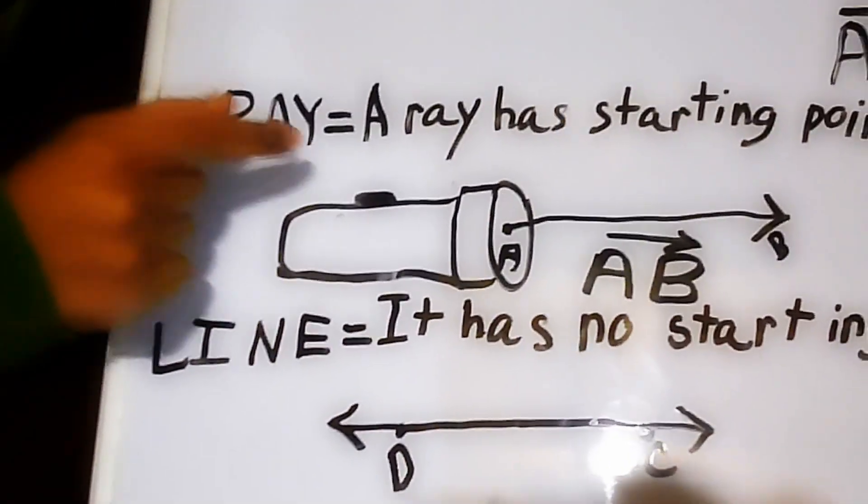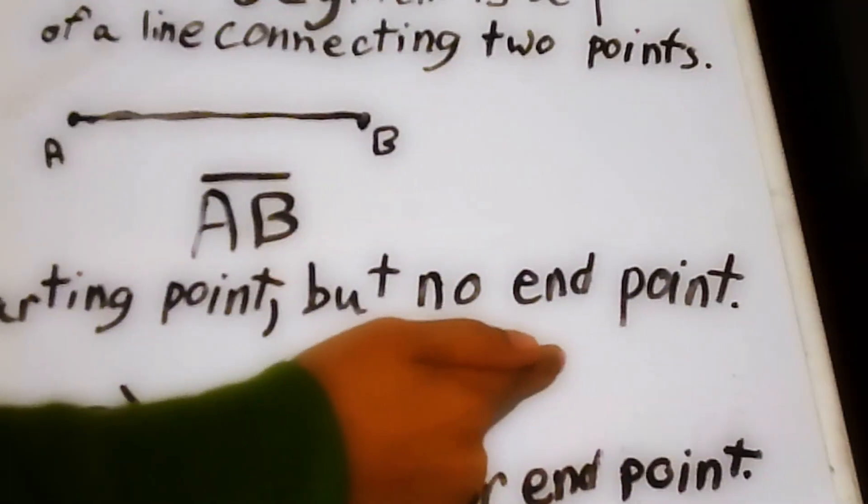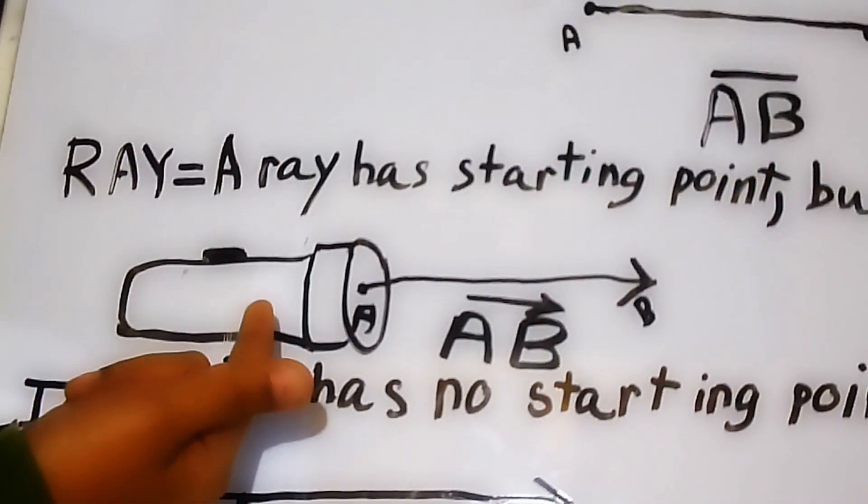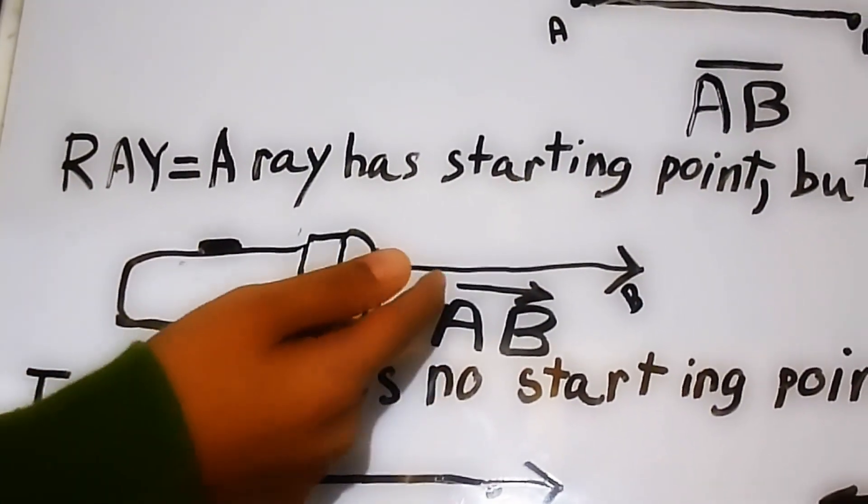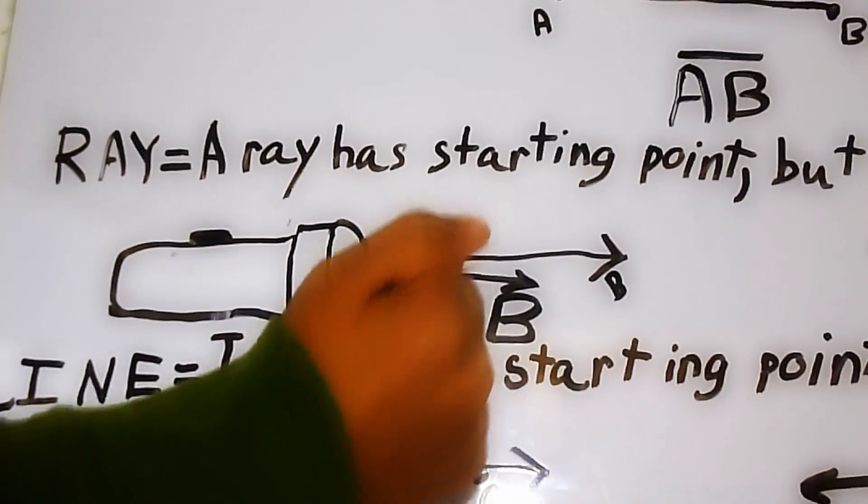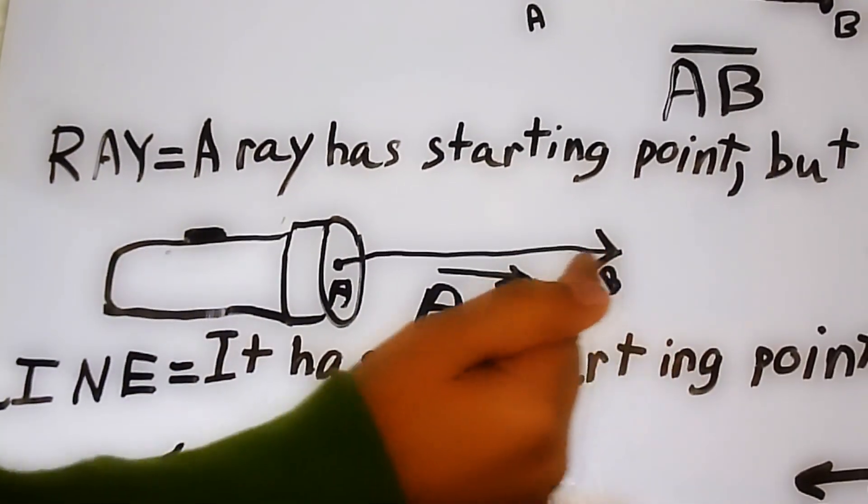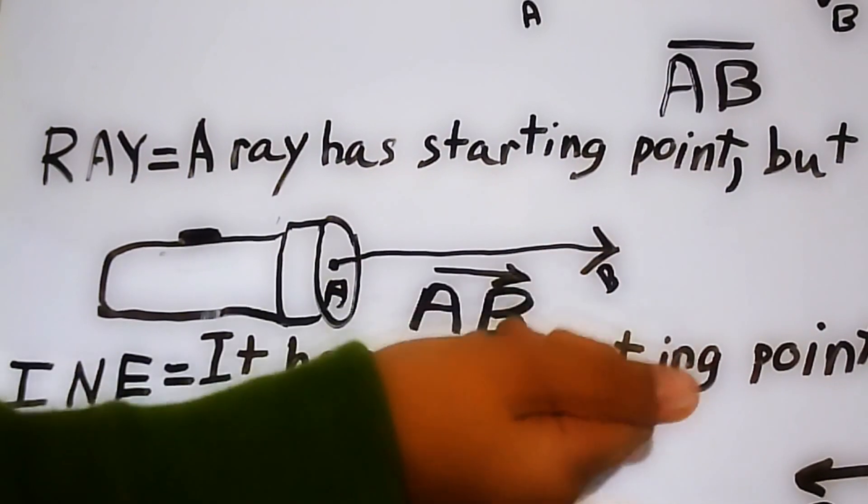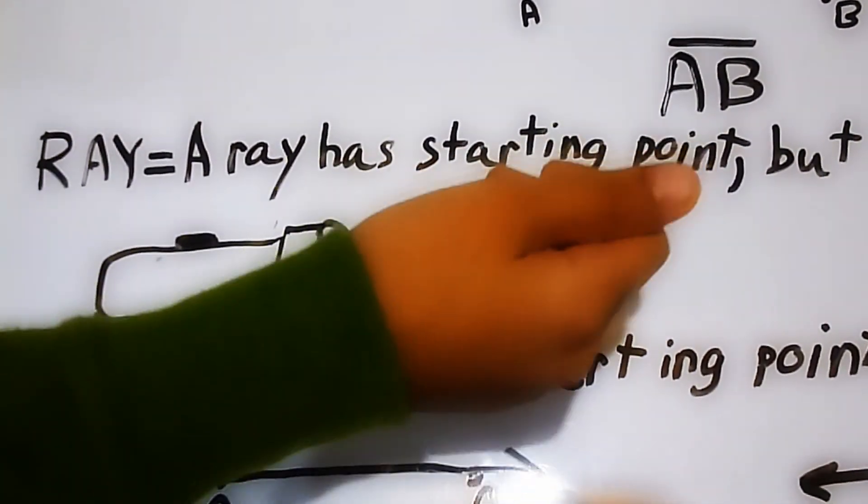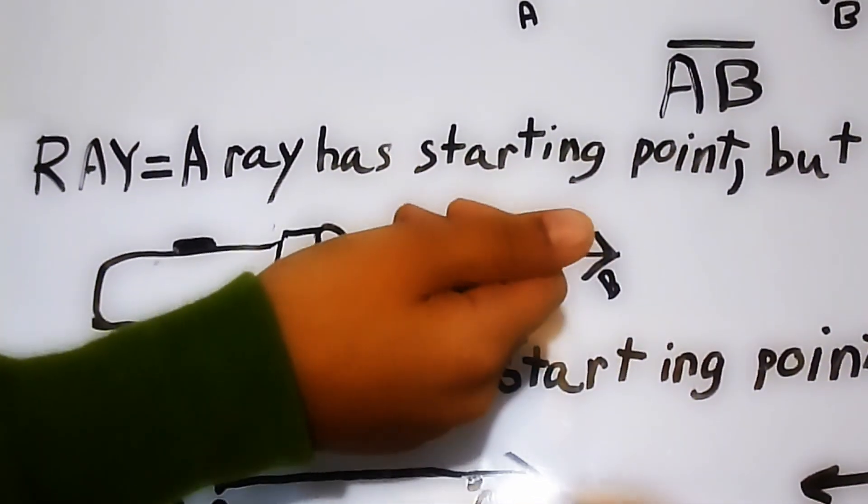So a ray has a starting point but no end point. For example, a flashlight goes forever and ever. Like if you hold a flashlight and put it up in the sky, it would keep going and going.